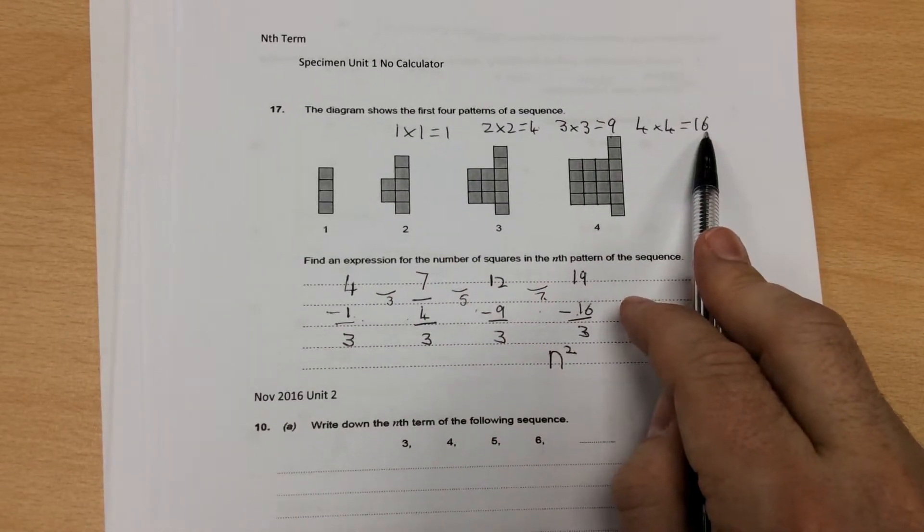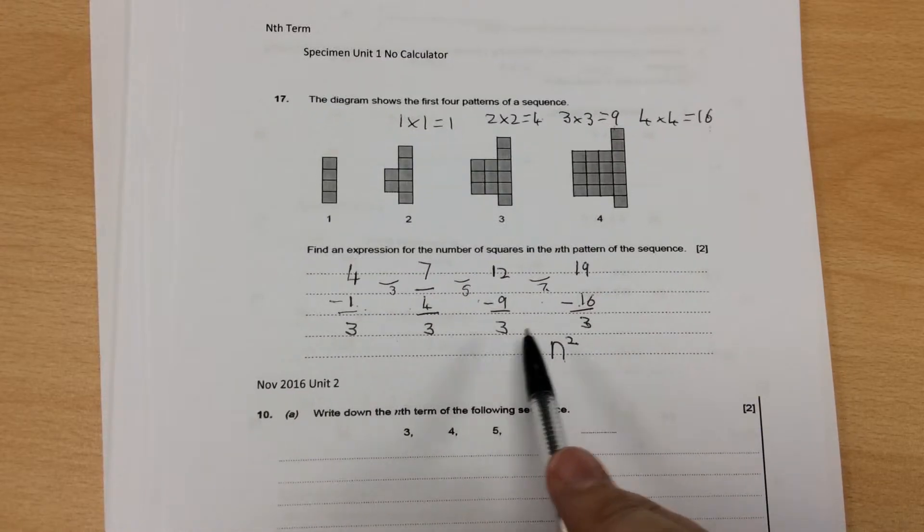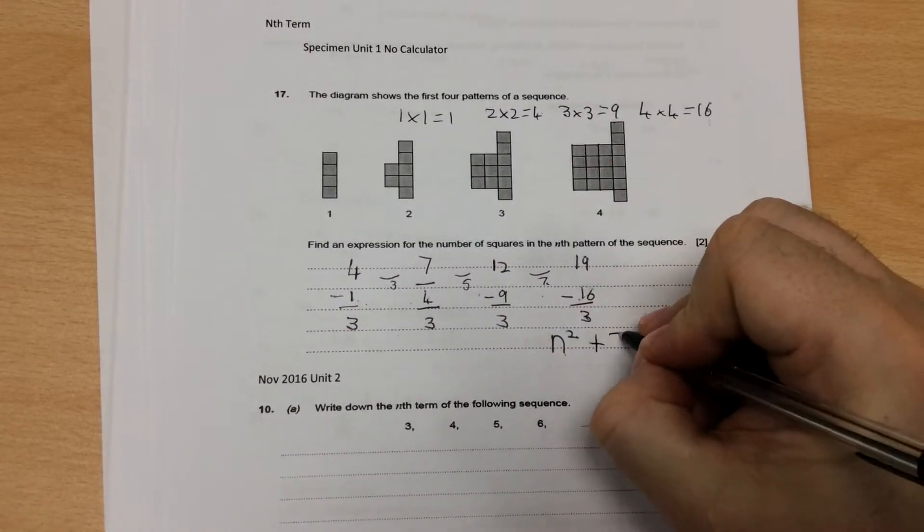The answer to this one is that it would have been n squared, because that was n squared, the one, four, nine, sixteen. And then, there's always three left over, so I've got to add three.